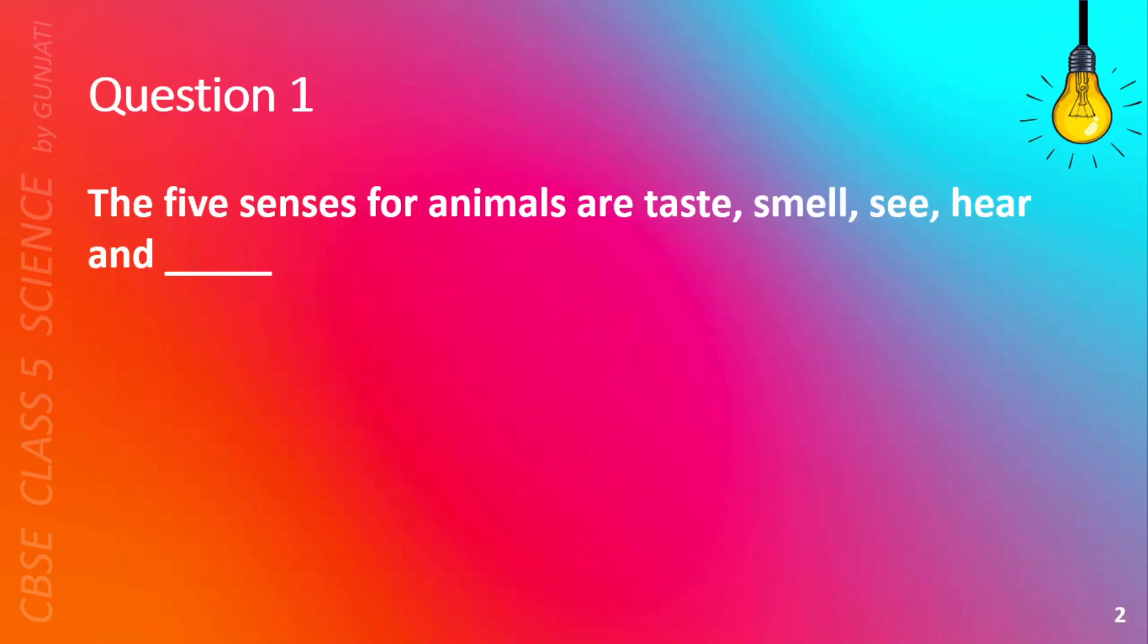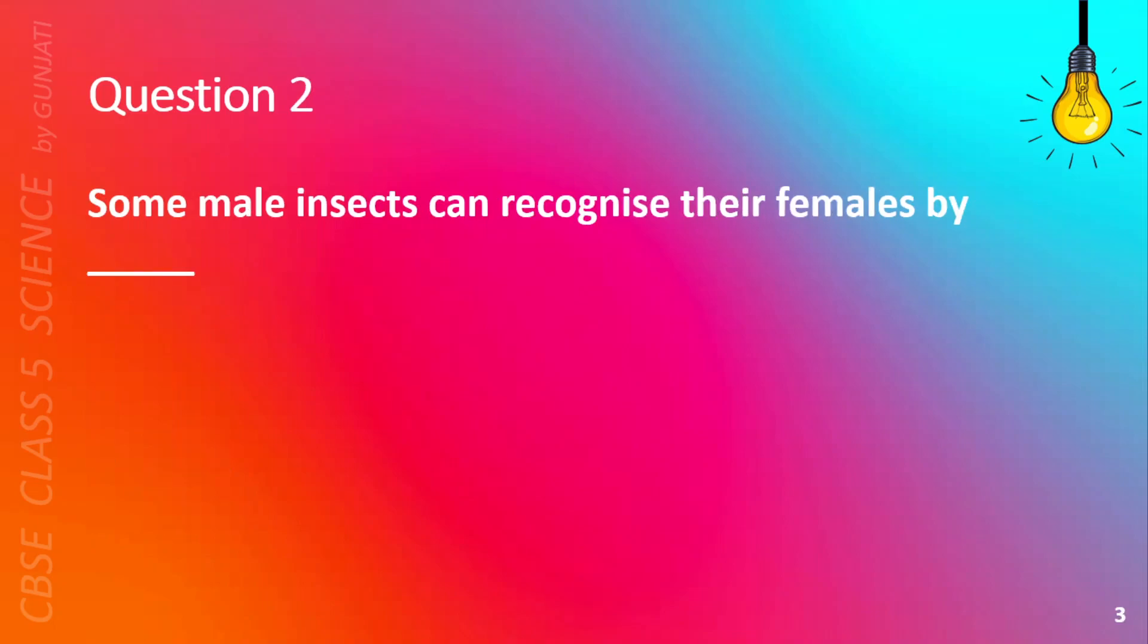Question 1. The five senses for animals are taste, smell, see, hear, and blank. A. Act, B. Eat, C. Feel, or D. Walk. The correct answer is C. Feel.